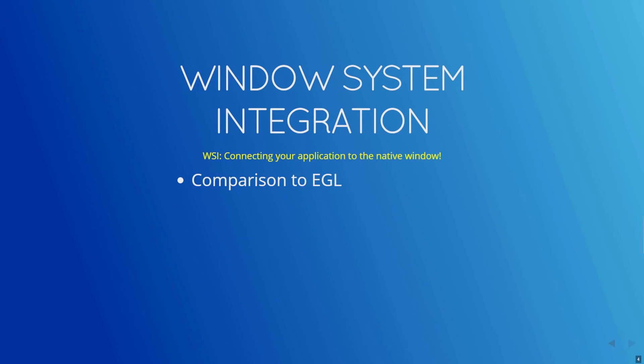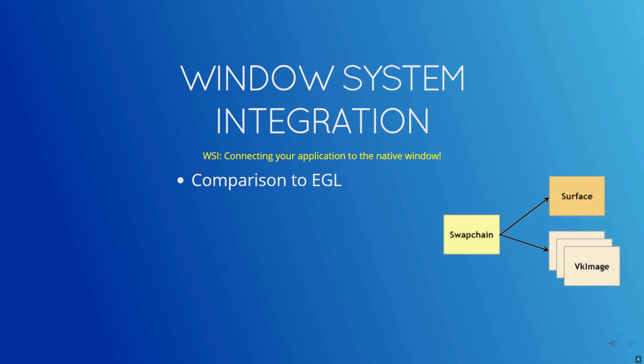EGL, as you know, is used in OpenGL ES programs to interface with the native platform windowing system. EGL handles context management, surface binding, and rendering synchronization. EGL is used with OpenGL, OpenCL, and other Khronos APIs.